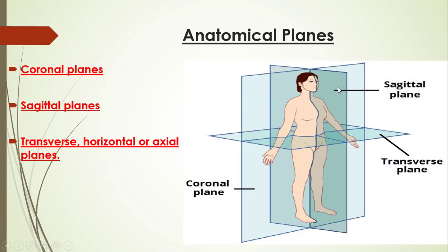The sagittal plane is oriented vertically but at right angles to the coronal plane. The sagittal planes divide the body into right and left parts. The median sagittal plane passes at the midline and divides the body into equal right and left halves.